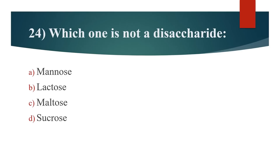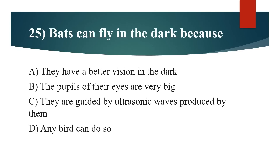24th question: Which one is not a disaccharide? Option A: Mannose. Option B: Lactose. Option C: Maltose. Option D: Sucrose. Answer is Option A: Mannose — it is a monosaccharide.